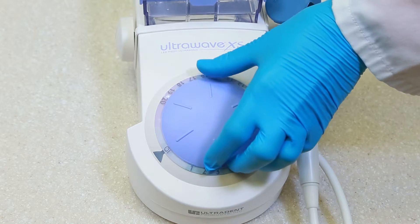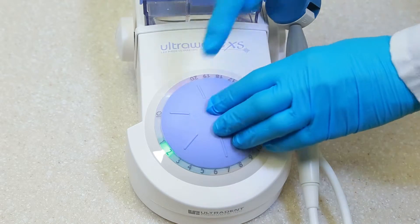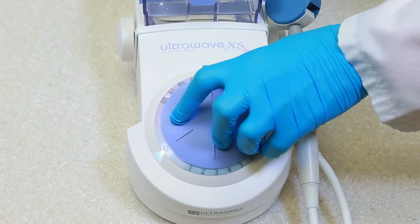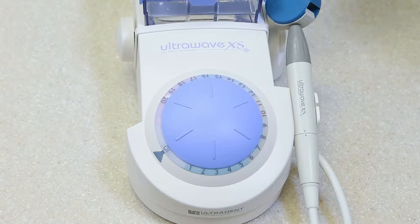Once you've confirmed your ultrawave XS is plugged in, make sure that the dial is in the on position. That can be verified by an audible click and the illumination of the dial.